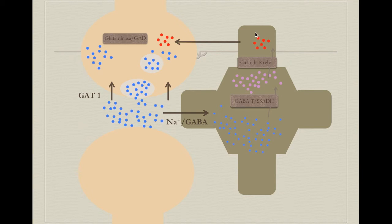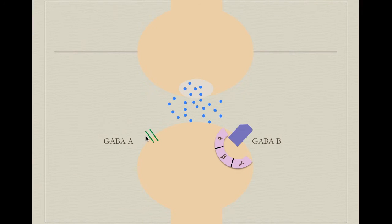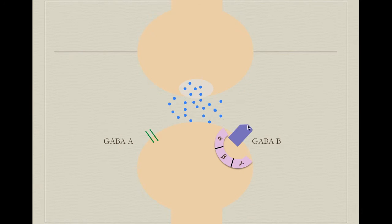Once GABA is metabolized, it can be recycled or donated to the neurons. Now, what is happening with GABA in the synaptic cleft? It can bind to one of two receptors, or both at the same time. There are GABA-A receptors — there's also a GABA-C, which seems to be the same or very similar, so I'll group them — and they are both ionotropic receptors. This means that when GABA activates the receptor, an ion channel opens so ions can flow inside or outside the cell. GABA-B receptors are G protein-coupled, so once GABA activates the GABA-B receptor, this G protein is activated and a series of second messengers change the physiology of the post-synaptic neuron.